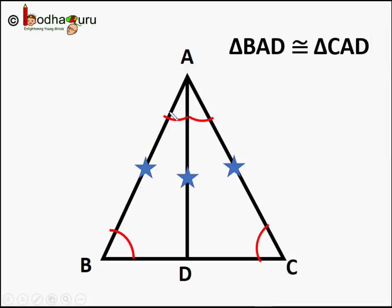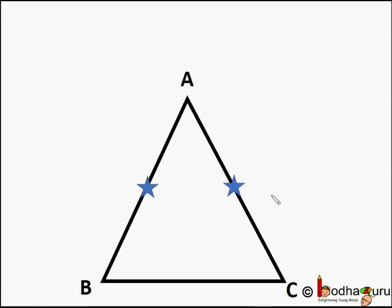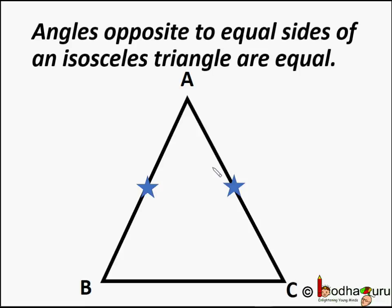So angle ABD is equal to angle ACD. That is angle B is equal to angle C in triangle ABC. So angles opposite to equal sides of an isosceles triangle are equal.